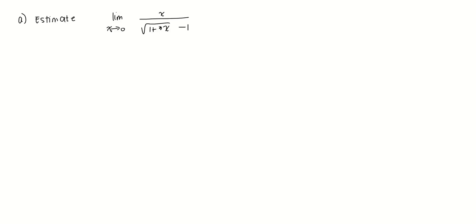For the first part of this problem, we want to estimate the limit of the function x over square root of 1 plus 3x minus 1 as x approaches 0 using its graph. Now, using decimals, you have this graph of the function, and we can see that as x approaches 0, either from the left side or right side of 0, the value of the function is approaching 0.667, so this is approximately 0.667.